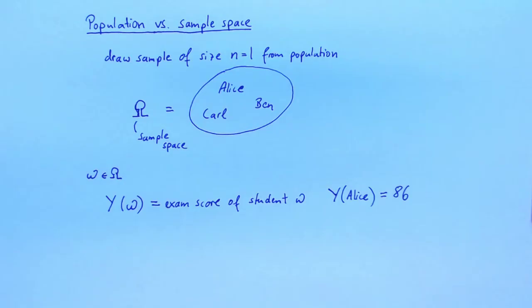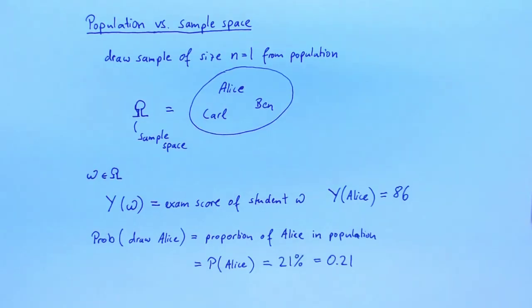What is the probability of drawing Alice? Or, in our metaphorical interpretation of the population, what is the probability of drawing someone like Alice? Since we are drawing completely at random, the probability of drawing someone like Alice is equal to the fraction of individuals in the population that are like Alice. In our example, that is 21%. This shows that there is a one-to-one mapping between our population and the random experiment of drawing once from the population.